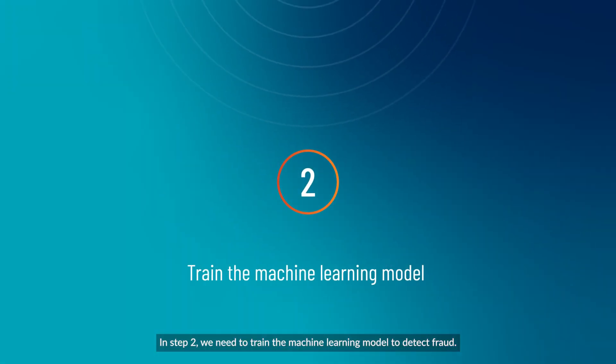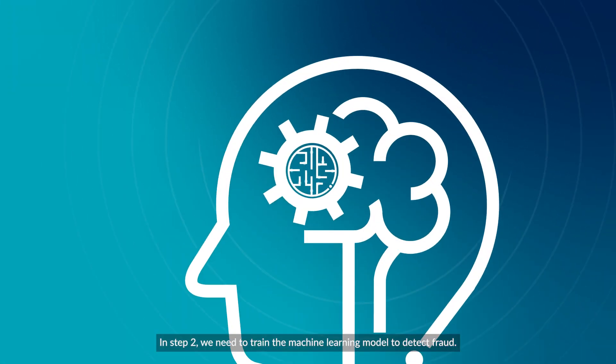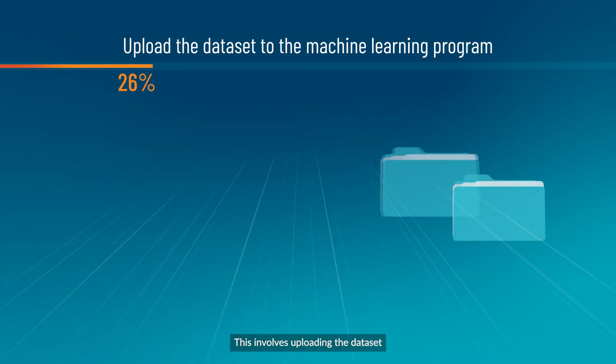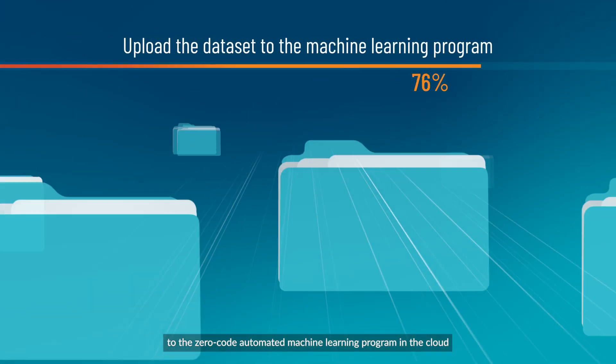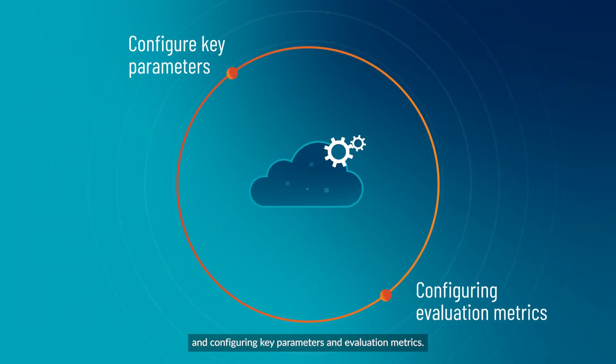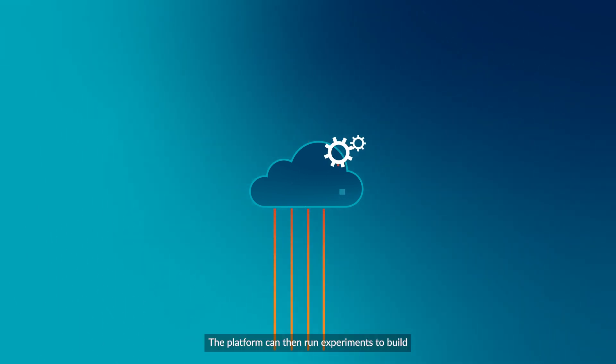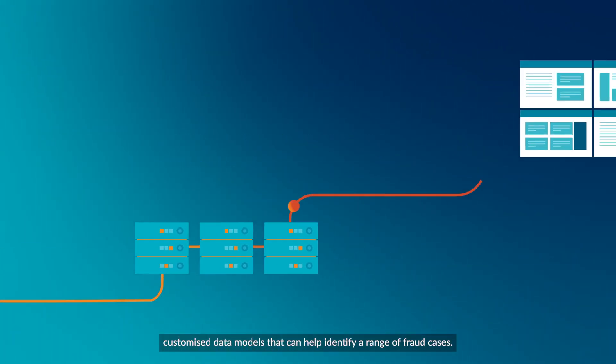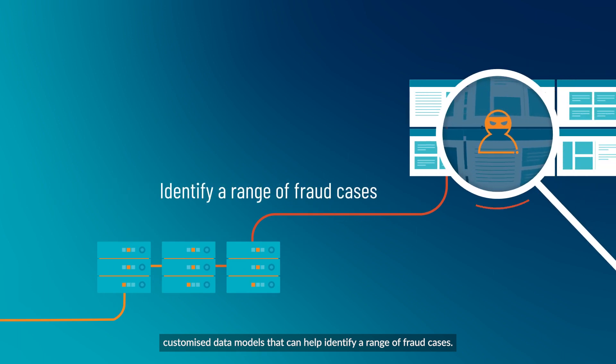In Step 2, we need to train the machine learning model to detect fraud. This involves uploading the dataset to the zero-code automated machine learning program in the cloud and configuring key parameters and evaluation metrics. The platform can then run experiments to build customized data models that can help identify a range of fraud cases.